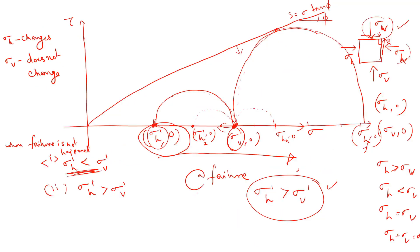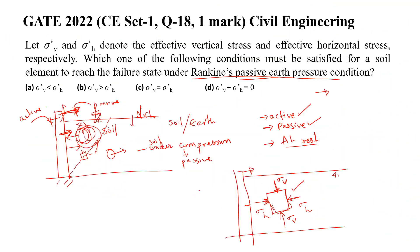So the answer is option A: σv' < σh', or equivalently σh' > σv'. This is the condition that must be satisfied for a soil element to reach the failure state under Rankine's passive earth pressure condition. Thank you.